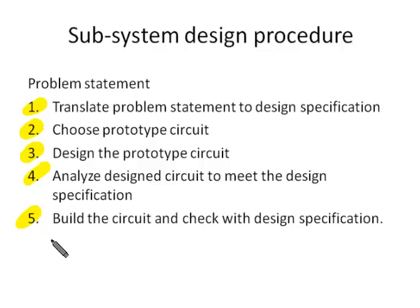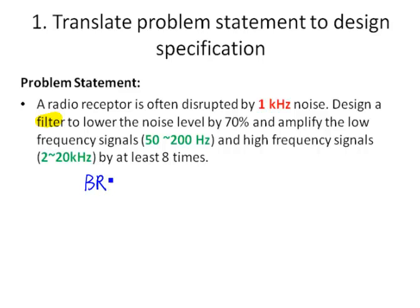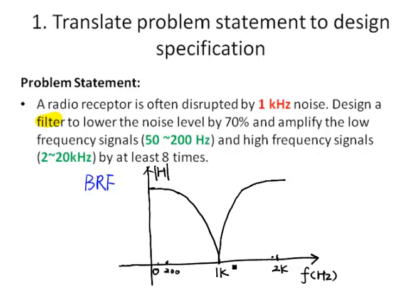Let's translate the problem statement into design specification. The noise is at 1 kHz. We want to lower the noise. At the same time, we want to amplify the low frequency signals and high frequency signals. So this should be a band reject filter — specifically an active band reject filter because we need to amplify the circuit by at least 8 times.